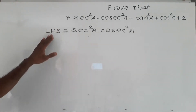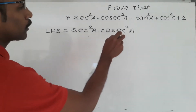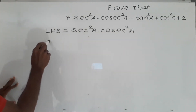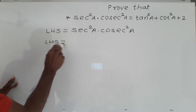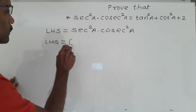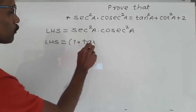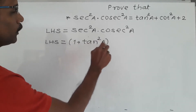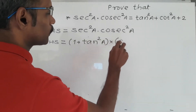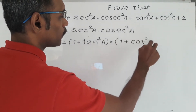I will first write here LHS is equal to sec square A into cosec square A. Now I will use the formula for both of these: sec square A means 1 plus tan square A, and cosec square A means 1 plus cot square A.